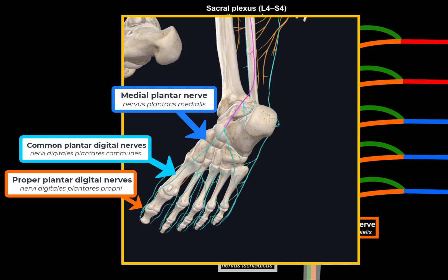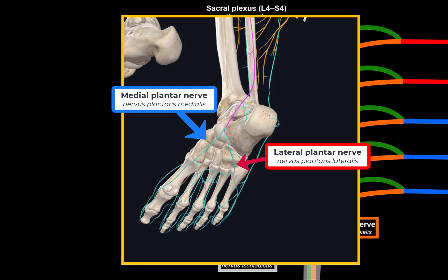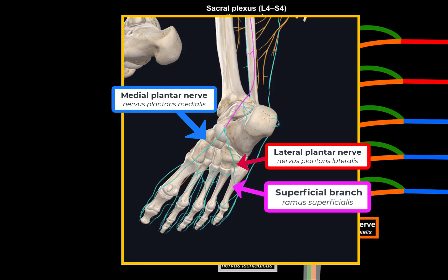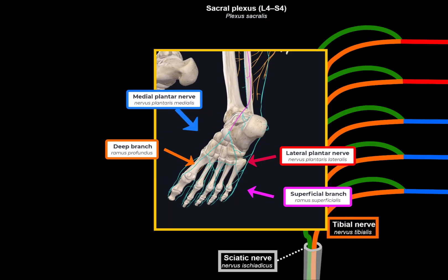The medial plantar nerve's sensory fibers supply the medial part of the sole and form common plantar digital nerves dividing into six digital plantar nerves for the first, second, third, and half of the fourth toes. The tibial nerve also gives off the lateral plantar nerve, which travels with the lateral plantar artery and veins, innervating the quadratus plantaris and helping with flexion of the lateral four digits. It divides into a superficial branch for the fourth and fifth toes, and a deep branch innervating the interossei, oblique head of adductor hallucis, abductor digiti minimi, flexor digiti minimi brevis, interossei, adductor hallucis, and lumbricals for the fourth and fifth toes.